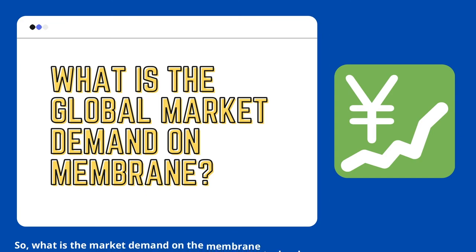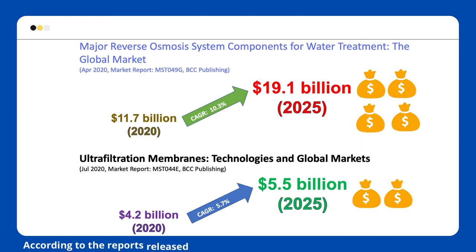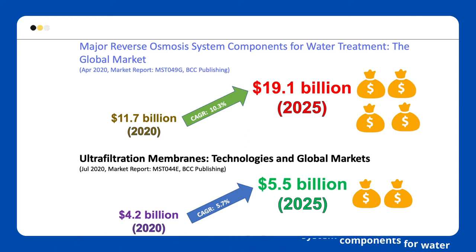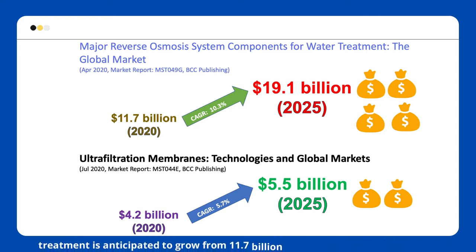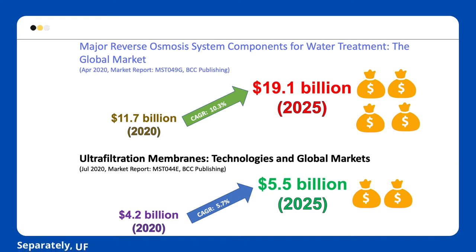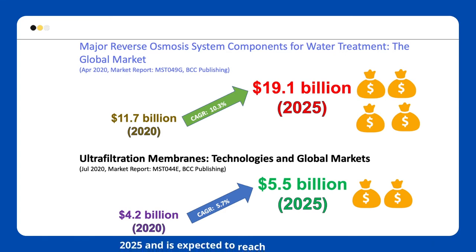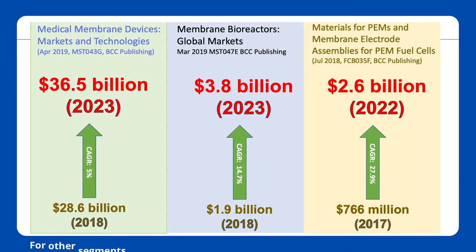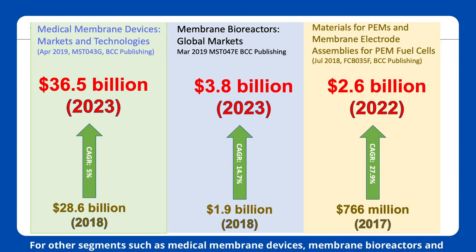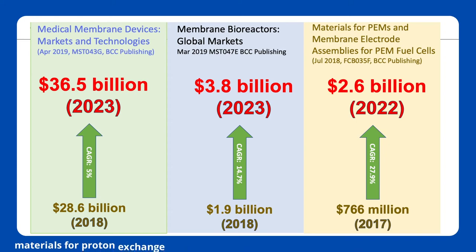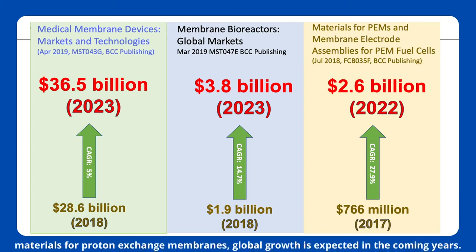So, what is the market demand on membrane technology now and in the near future? According to reports released by BCC Publishing, reverse osmosis system components for water treatment are anticipated to grow by two digits from $11.7 billion in 2020 to more than $19.1 billion in 2025. Separately, ultrafiltration membrane sales are also forecast to increase gradually between 2020 and 2025, expected to reach $5.5 billion in 2025. For other sectors such as medical membrane devices, membrane bioreactors, and materials for proton exchange membranes, global growth is expected in the coming years.